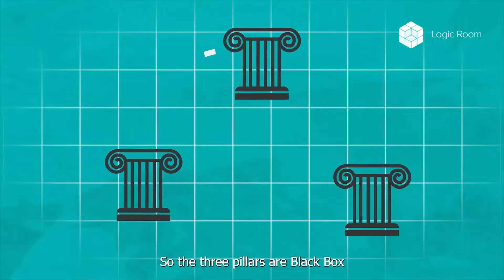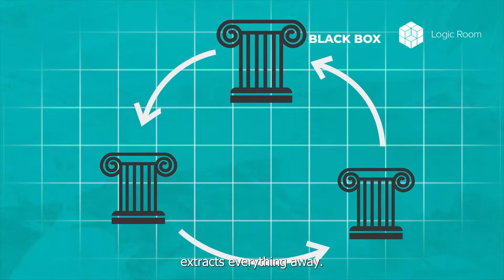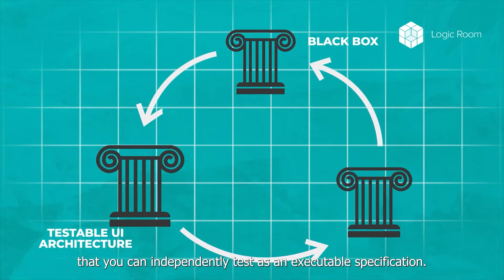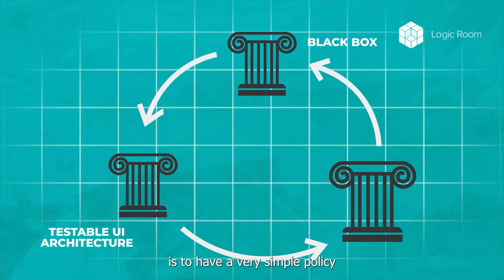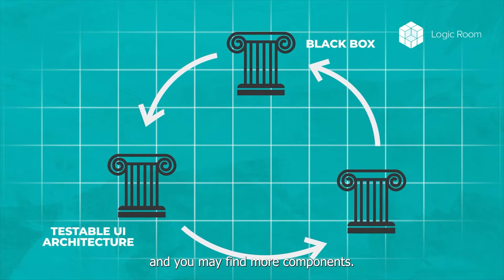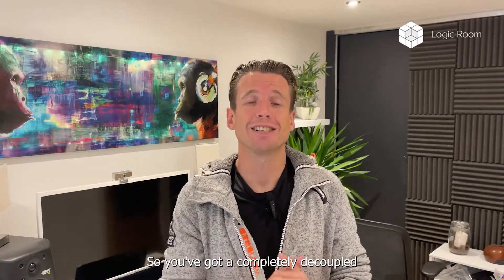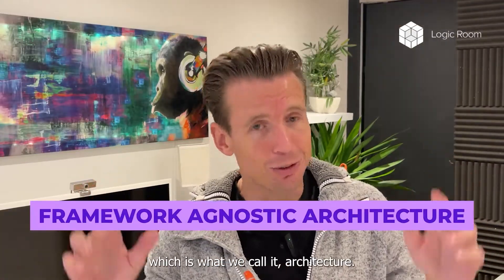So the three pillars are: first, the Black Box — extract everything away from the framework; second, the Testable UI Architecture — turn the Black Box into a finite state machine you can independently test as an executable specification; third, a simple component policy — break all your components into four types: a dumb component and three others explicitly designed to control the Black Box, helping you progressively build, scale, test, and plug back into the framework for a fully decoupled, framework-agnostic architecture.